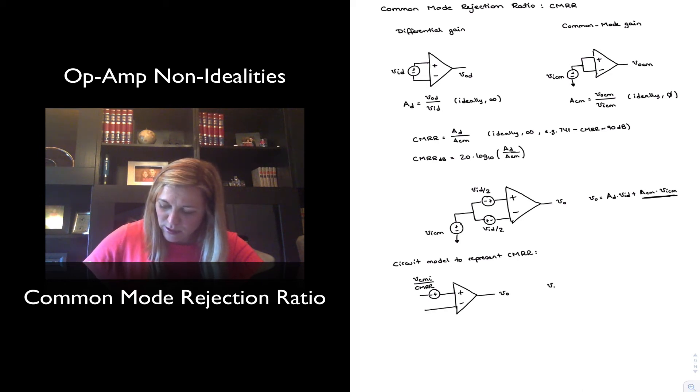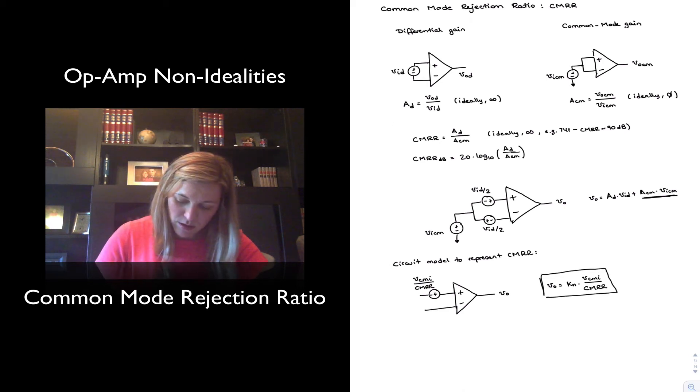And the way we will calculate the output of the op-amp or the portion of the output due to the finite CMRR will be the noise gain times that input quantity Vcmi divided by CMRR. So this is how the effect in the output will be modeled. This is the original expression for CMRR, both of them.